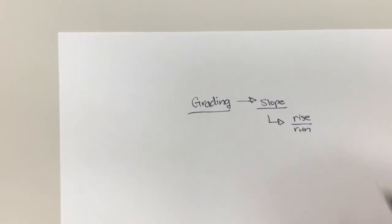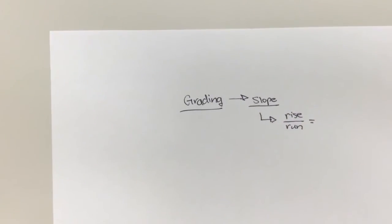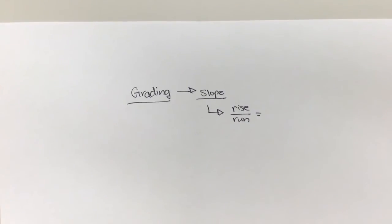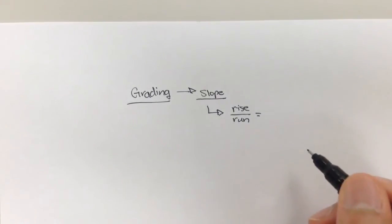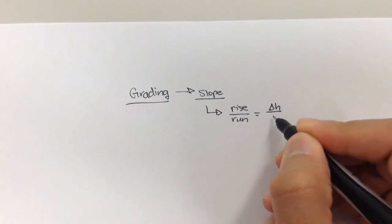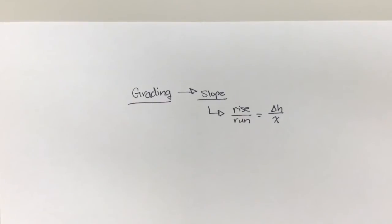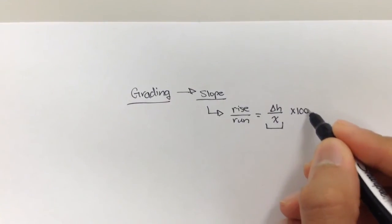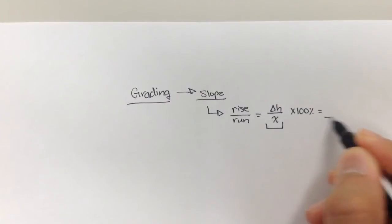Well, what does that mean? It's some type of a number that tells you how pitched or sloped a certain line is. And so rise over run, you may also know as change in height over some distance. And x is just some distance. When we're talking about slope or grading, we usually have this number in a percent sign. So whatever this value turns out to be, we multiply it by 100% and we get a certain number.